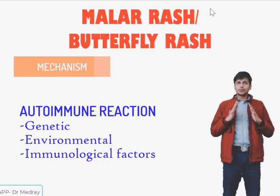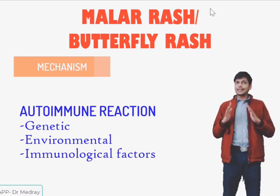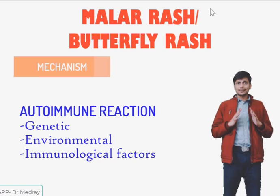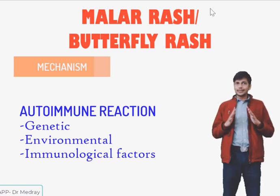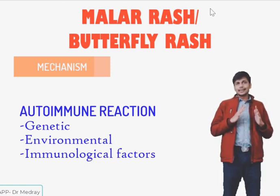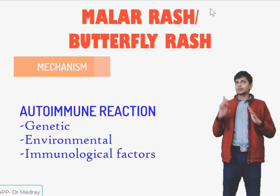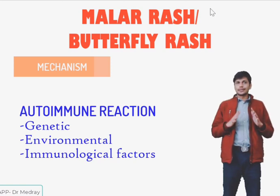When the person is exposed to sunlight, there is degradation of the keratin of the epidermis, which produces apoptotic cells, and these apoptotic cells can cause autoimmunity.